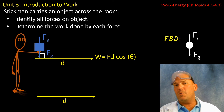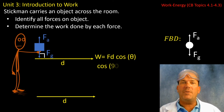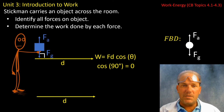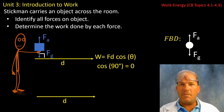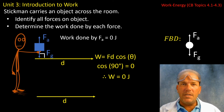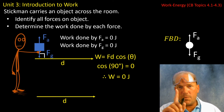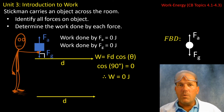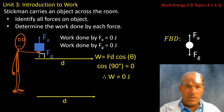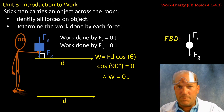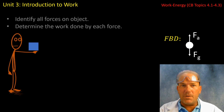If we consider the work equation and the trigonometry, cosine of 90 degrees gives us zero. Therefore, the work done by the force of gravity and the work done by the force applied are both equal to zero joules. Again, joules is a derived unit — the base SI unit being a Newton meter. Consider the units: we're taking a force with the unit Newton and multiplying it by displacement with the unit meters. That's where Newton meters comes from, or the joule.